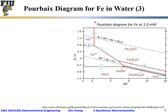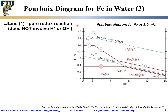Now let's look at another line — this time this horizontal line, we call it Line 1. It represents a pure redox reaction that does not involve a proton or hydroxyl group. This horizontal line, Line 1, is a pure redox reaction and it does not involve a proton or hydroxyl group.